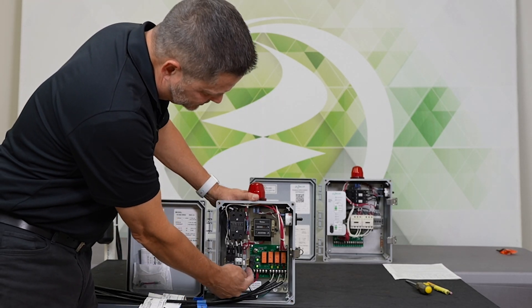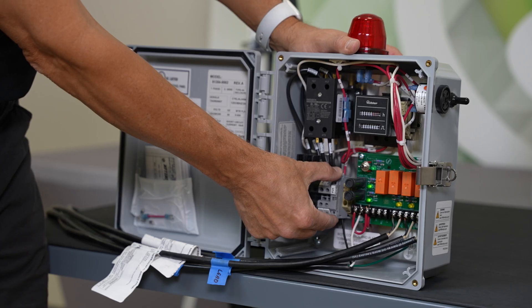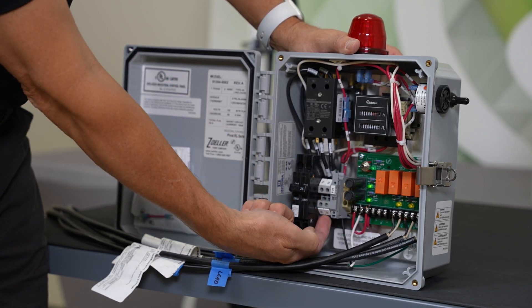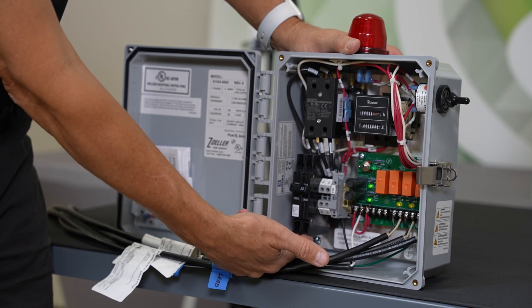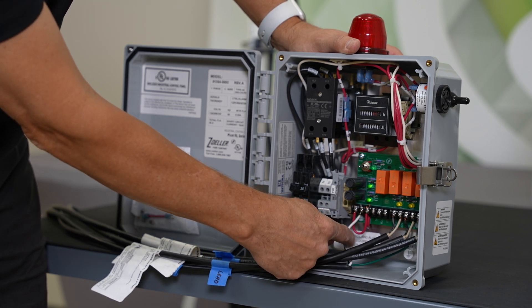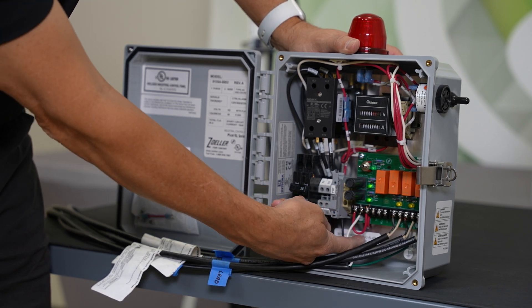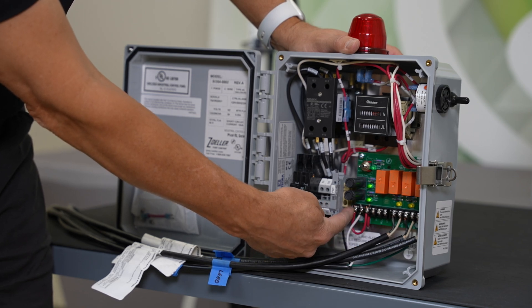On the other side of the fuses, we have an incoming power fuse that's built into this device here. This is where you would connect your pumps. This is where you would connect your incoming pump power. On our example here, we have our alarm and control circuits jumpered.